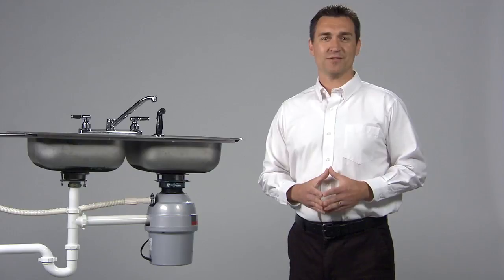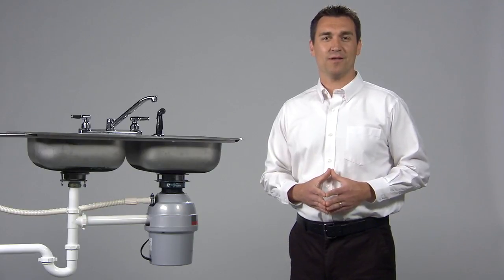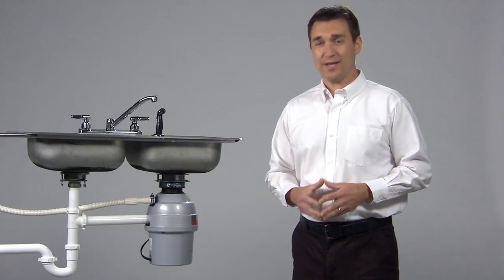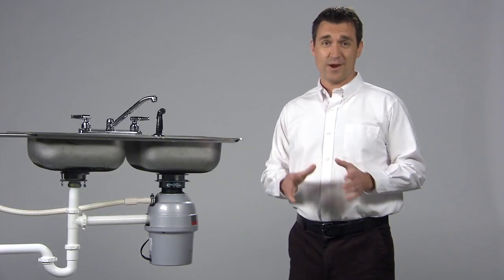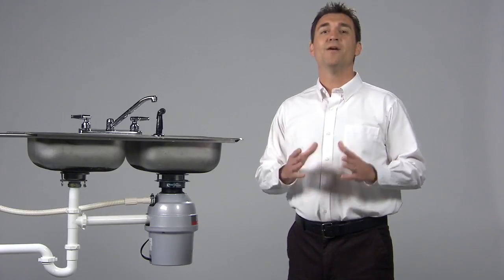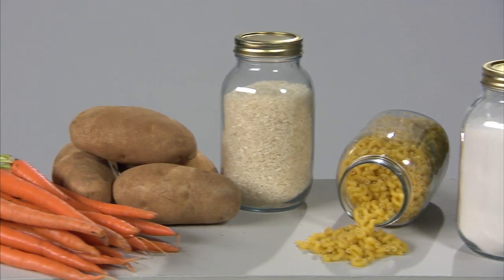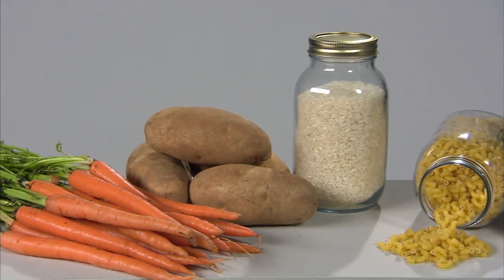Second, avoid putting coffee grounds and tea leaves into your garbage disposal. They'll collect in the drain trap right here. Before long, the drain will get clogged. Finally, don't put flour, pasta, rice, and potato or vegetable peels down your disposal.